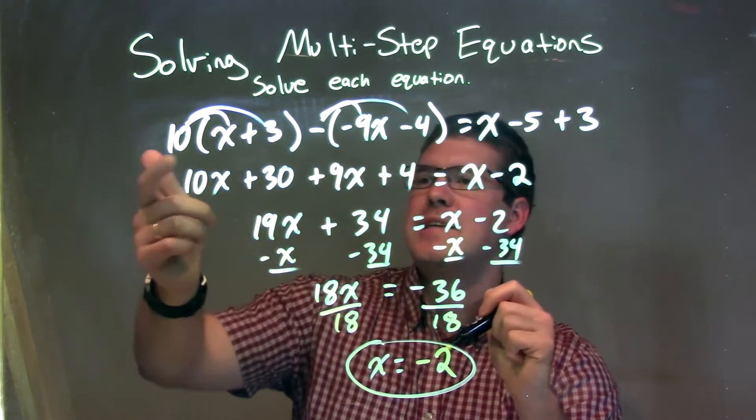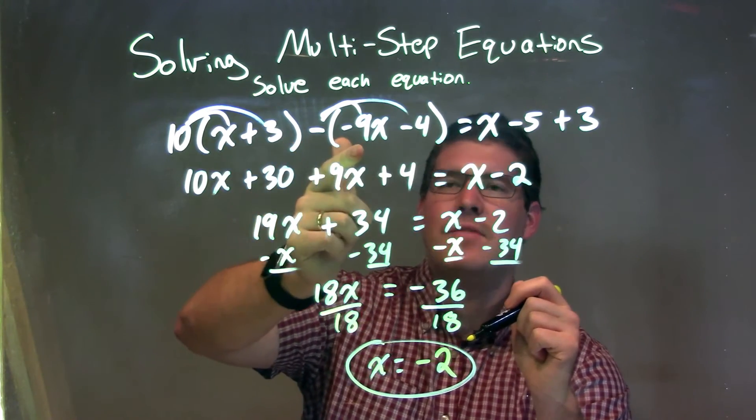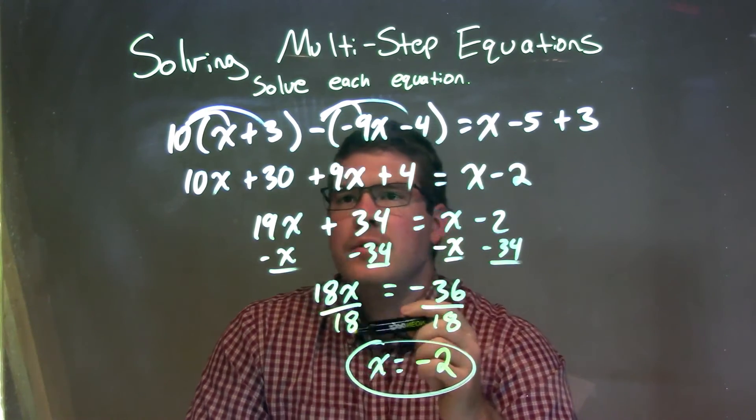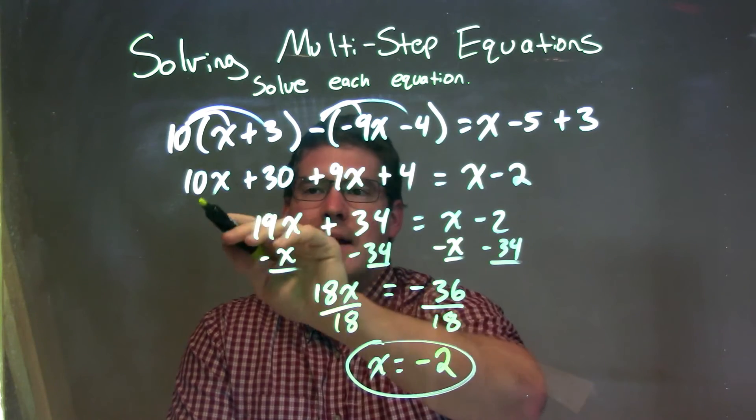Let's recap. We're given 10(x + 3) - (-9x - 4) = x - 5 + 3. What I want to do is distribute the 10 to both parts out of the parentheses. So I got 10x plus 30.